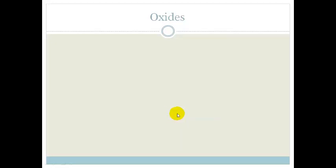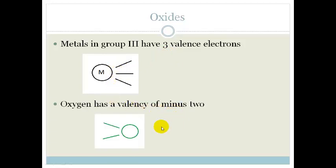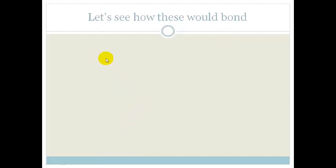It doesn't have to so it's 1 each. But now let's look at the metals in group 3. The metals in group 3 have got 3 valence electrons. That's what it looks like. And oxygen has a valency of minus 2. So let's just see how that would bond.